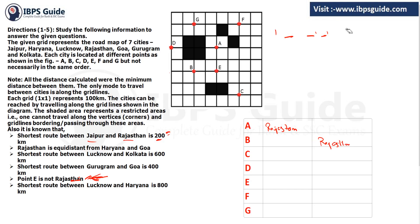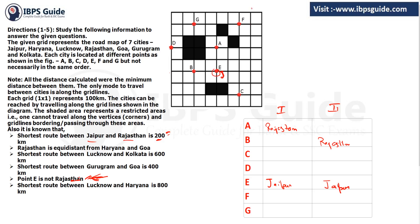If we take A as Rajasthan, then E must be Jaipur. If we take B as Rajasthan, E is also Jaipur because there is no other point 200 kilometers from B. So in any case — Case 1 or Case 2 — Jaipur must be at point E. Point E is fixed as Jaipur.